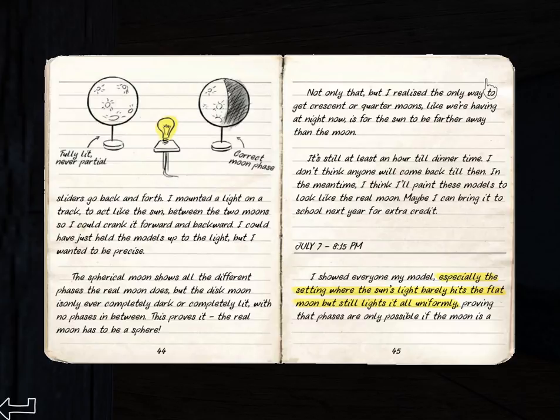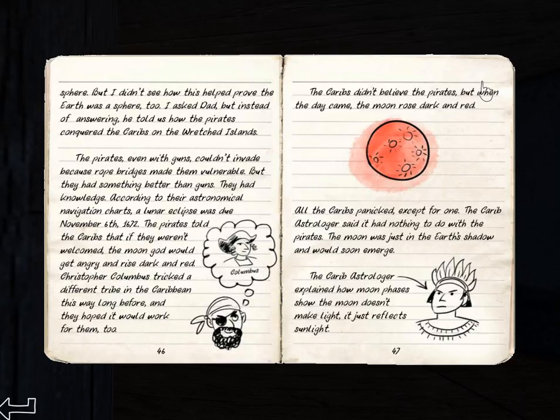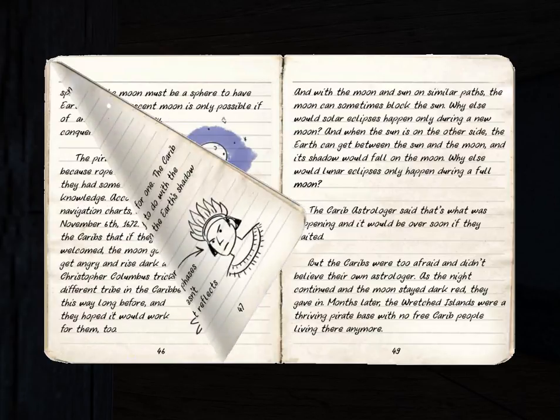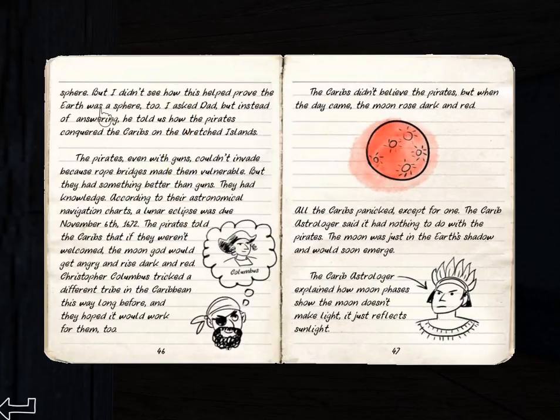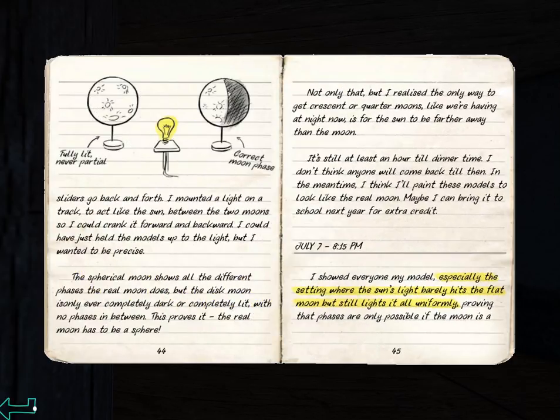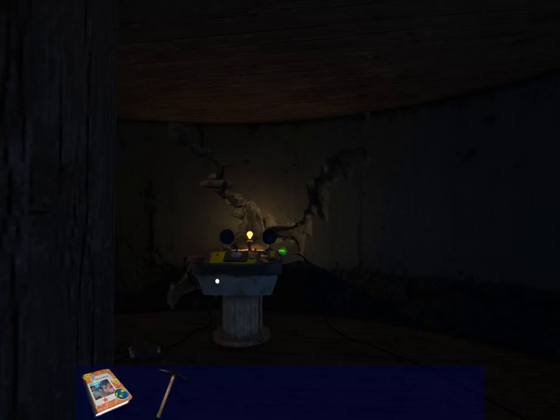So the fully lit moon. There's the correct moon. I showed everybody my model. The setting where the sun's light barely hits the flat moon, but still lights it in all of its uniformity.